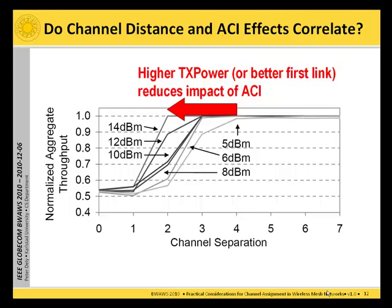If we have a very high transmission power — for example 14 dBm on the first link — that means we get a good signal reception on the middle node, and we only need a channel separation of 2 to get full aggregate throughput. However, if we have a very weak first link — for example when using only 5 dBm transmission power — we need a channel separation of at least 4 to get full throughput.